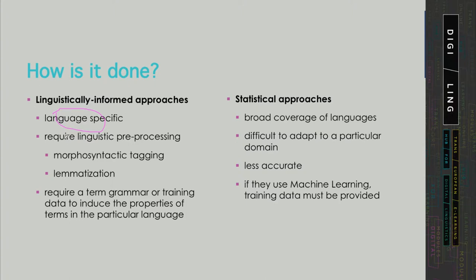Usually this consists of morphosyntactic tagging and lemmatisation as the minimum for term extraction. On the other hand, there are tools — for example, the term extractors offered by some commercial translation applications such as SDL or MemoQ — that need to remain language-independent so that they offer a broad range of languages, and therefore they use purely statistical methods to identify terms. It must be noted that these are, of course, less accurate than the linguistically informed approaches.